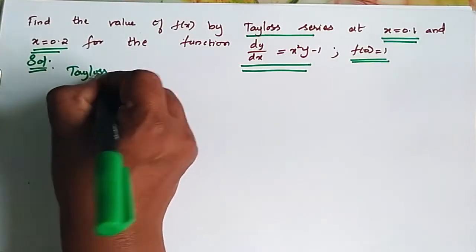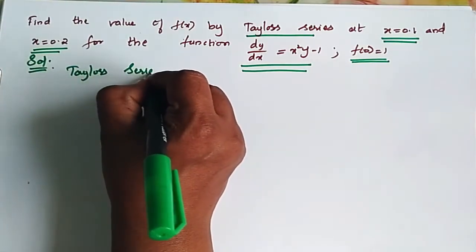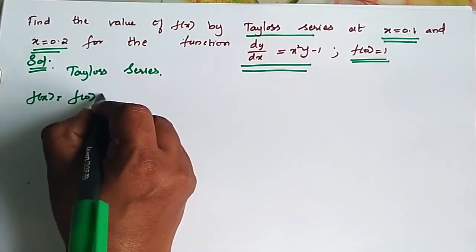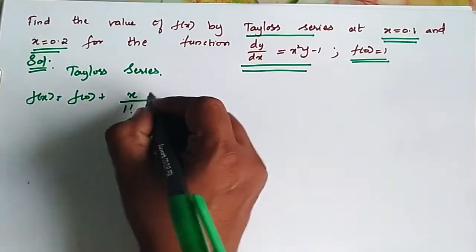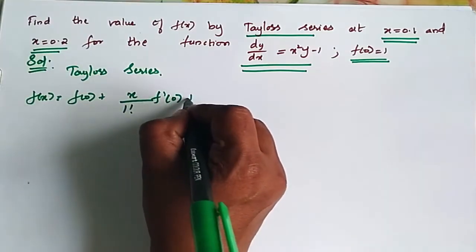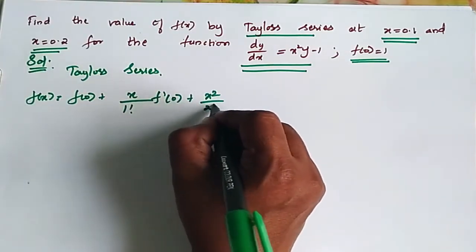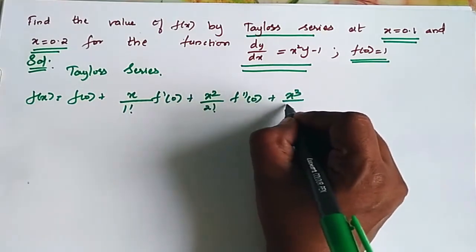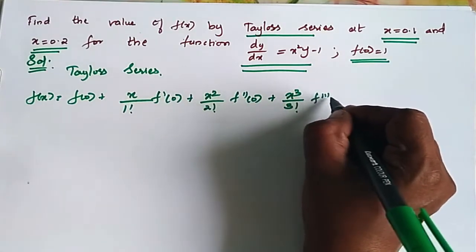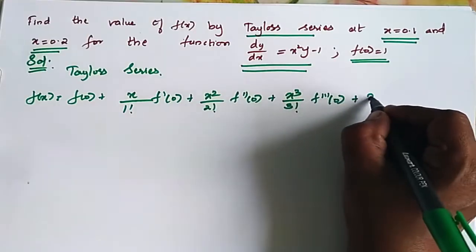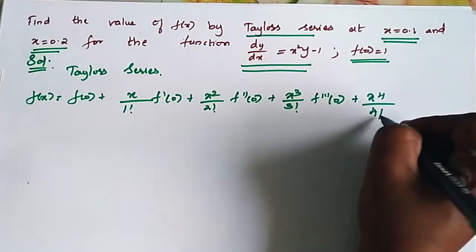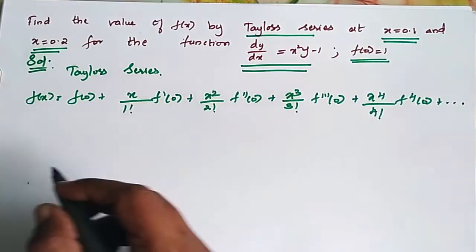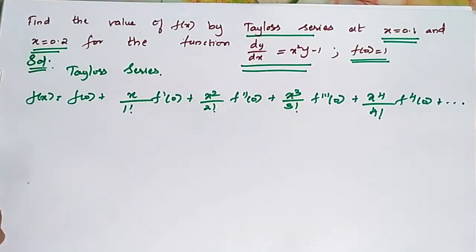Taylor's series. F of x is equal to f of 0 plus x by 1 factorial into f dash of 0, plus x square by 2 factorial into f double dash of 0, plus x cube by 3 factorial into f triple dash of 0, plus x power 4 by 4 factorial into f power 4 of 0, plus etc.